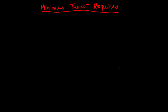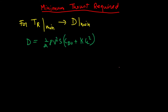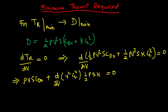Now let us come to minimum thrust required. For steady level flight, minimum thrust required means minimum drag. Drag equals half rho v squared S CD0 plus k CL squared. From calculus, the condition for minimum thrust required is found by differentiating drag with respect to v and setting it to zero. So d/dv of (half rho v squared S CD0 plus half rho v squared S times k CL squared) equals zero. Here half rho S and k are constants, and v and CL are the only variables, so we differentiate d/dv of v squared times CL squared.